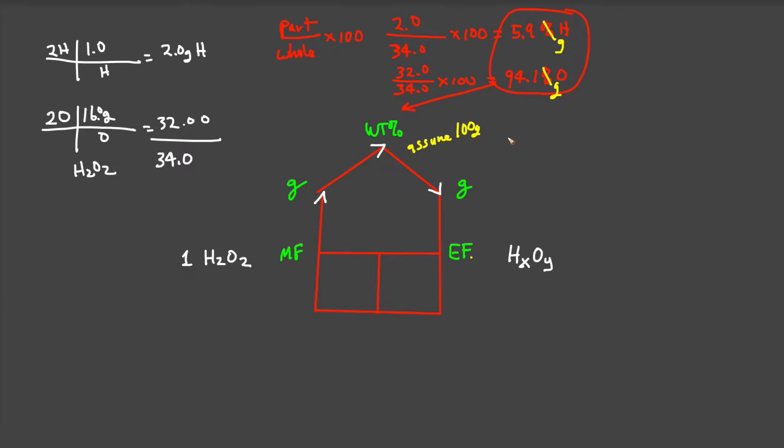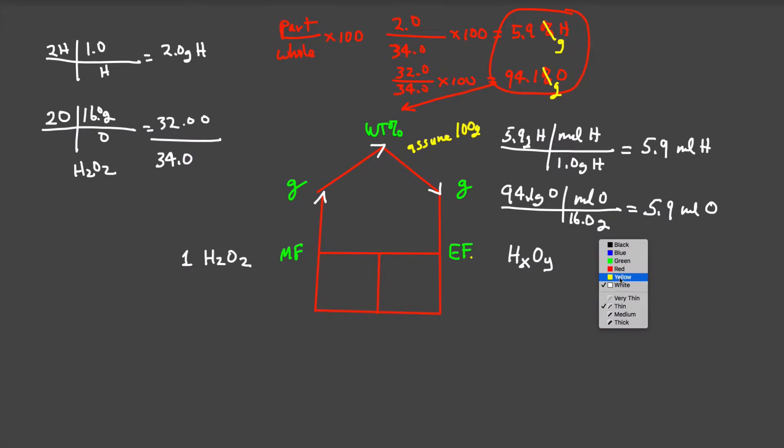For hydrogen, 5.9 grams of hydrogen with 1.0 grams per mole gives us 5.9 moles of hydrogen. Similarly, 94.1 grams of oxygen also gives us 5.9 moles of oxygen. So our formula is H5.9O5.9. I have the proper mole ratio but not in proper form - these must be expressed as whole number integers.